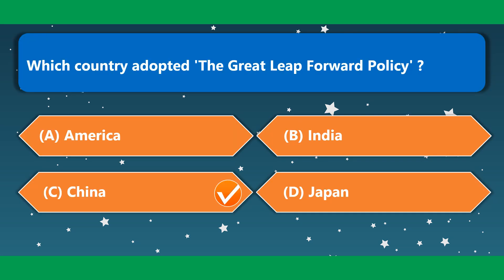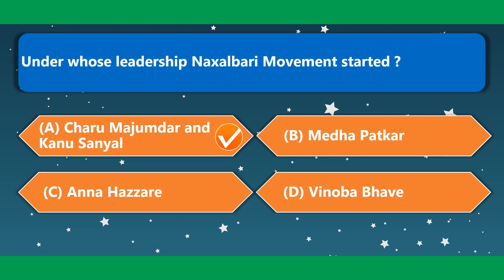Which country adopted the Great Leap Forward policy? This is China. Mao Zedong adopted the concept of the Great Leap Forward policy in China. Under whose leadership did the Naxalbari movement start? The correct option is option A — Charu Mazumdar and Kanu Sanyal.